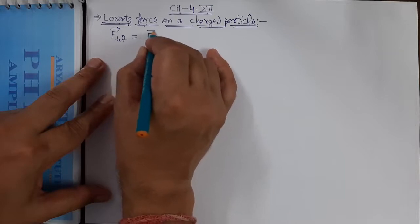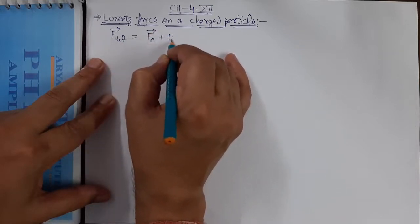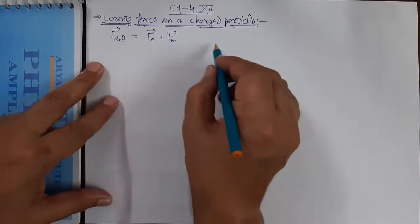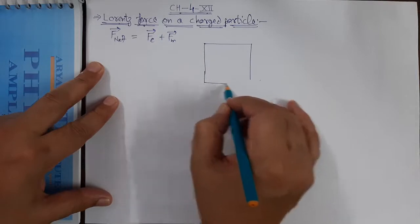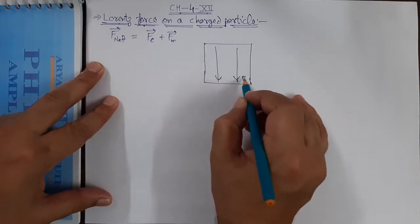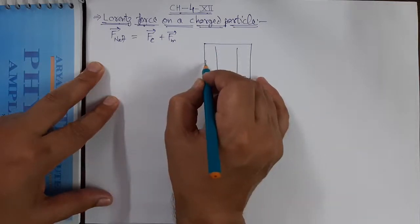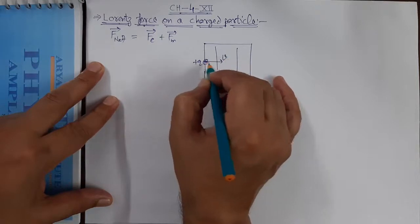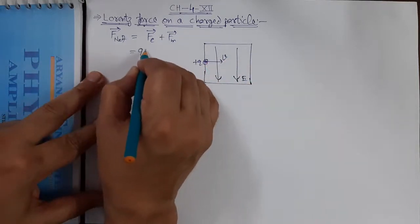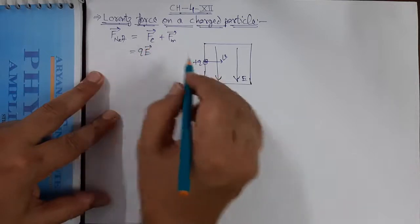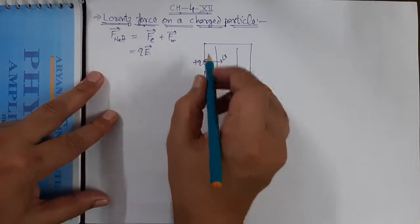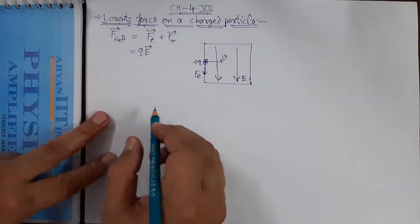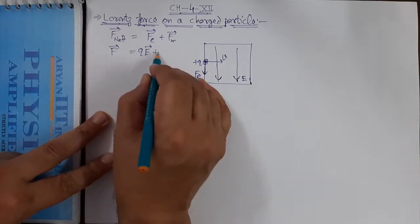The net force on a charged particle in the presence of electric and magnetic fields is the vector addition of electric and magnetic forces. Fe stands for electric force, Fm stands for magnetic force. For example, in a region where there is a uniform electric field intensity directed downward, when a particle of charge +Q is thrown with velocity V, it experiences an electric force F = QE in the direction of the field, i.e., downward.